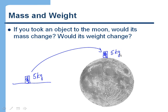In other words, the object still is made up of the same number of protons, neutrons, and electrons as it was before. However, what will have changed is the weight, and that's simply because the force of gravity is less on the Moon.